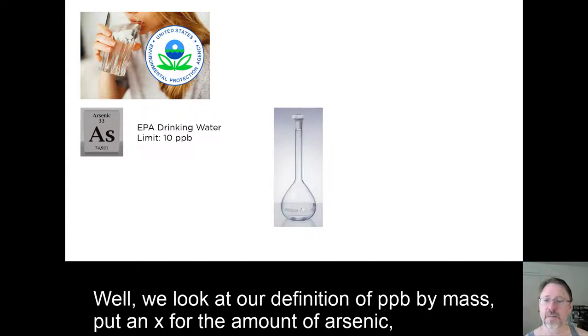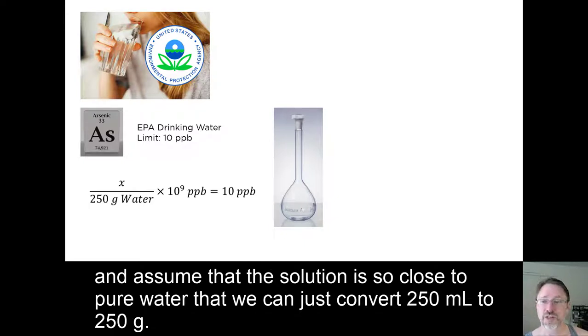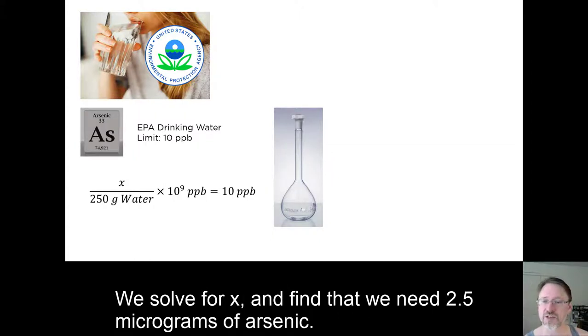Well, we look at our definition of ppb by mass, put an x for the amount of arsenic, and assume that the solution is so close to pure water that we can just convert 250 milliliters to 250 grams. We solve for x and find that we need 2.5 micrograms of arsenic.